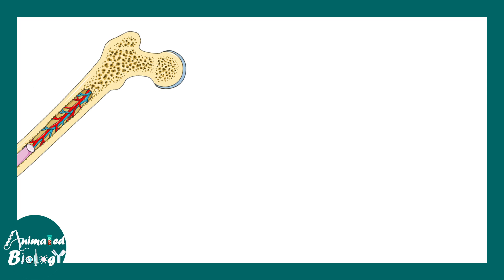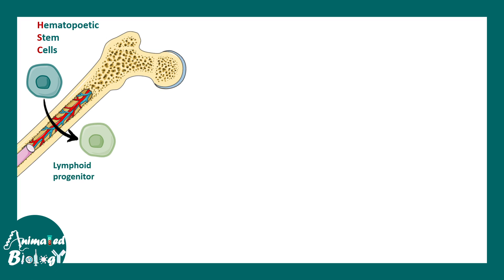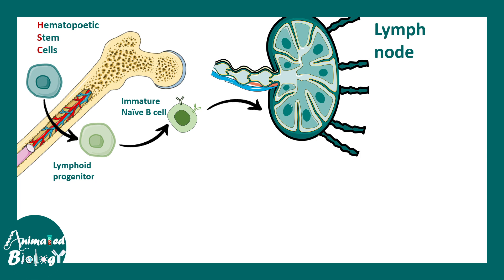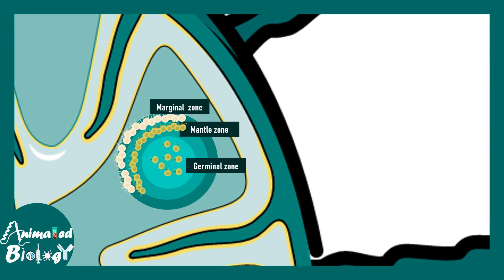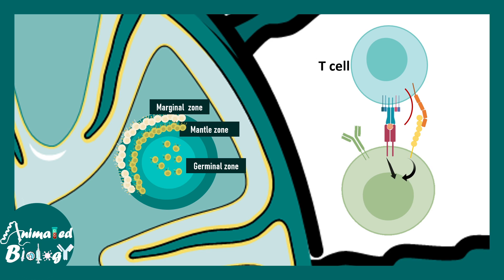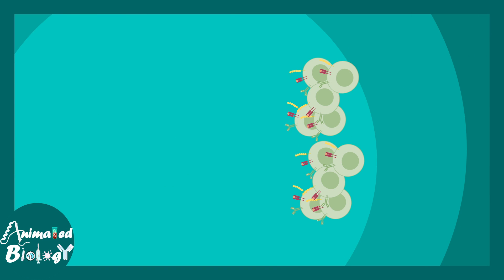To understand what goes wrong, let's first look at normal B cell development. B cell development starts from the bone marrow with hematopoietic stem cells, which give rise to lymphoid and myeloid progenitors. B cells are derived from lymphoid progenitors and exit the bone marrow as immature naive B cells that enter the lymph node. Inside the lymph node, B cells reside in the lymph follicles, which have distinct layers: the germinal center, the mantle zone, and the marginal zone. B cells are activated with the help of T cells.